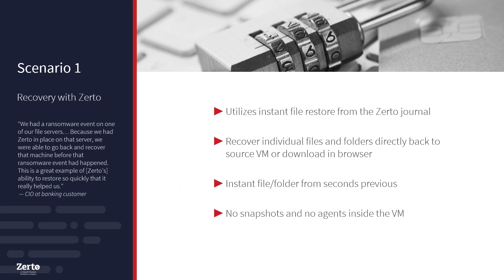To summarize, recovery in Scenario 1 utilizes instant restores from the journal for both files and folders. They can be restored directly to their source or downloaded via a browser. Since it's journal-based, the copy that's being restored can be seconds prior to an infection. And lastly, since Zerto uses continuous data protection at the hypervisor level, no agents and no snapshots are required to achieve this.